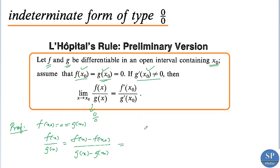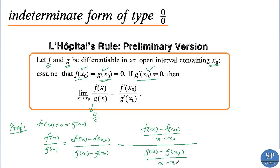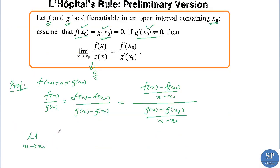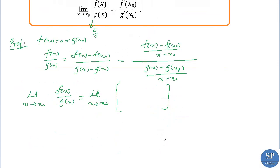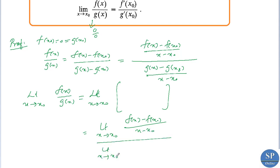This can be rewritten by dividing both numerator and denominator by (x − x₀): the numerator becomes [f(x) − f(x₀)]/(x − x₀), and the denominator becomes [g(x) − g(x₀)]/(x − x₀). Taking the limit as x approaches x₀, by the quotient rule for limits we have: the limit of [f(x) − f(x₀)]/(x − x₀) divided by the limit of [g(x) − g(x₀)]/(x − x₀).